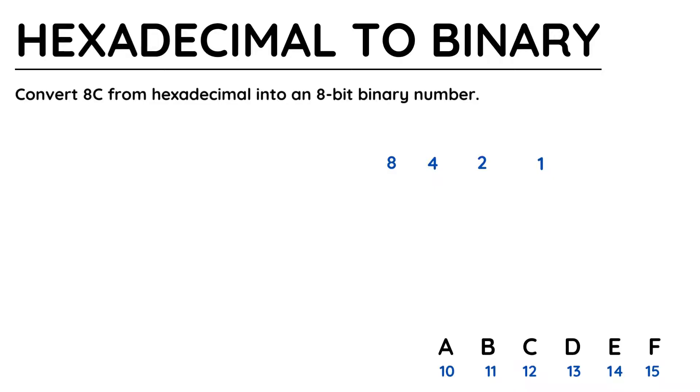If you've converted between binary and denary, you will know that we start with 1 and double for the number of bits that we need. Because hexadecimal characters need 4 bits, we double until we have 4 values: 1, 2, 4, and 8.